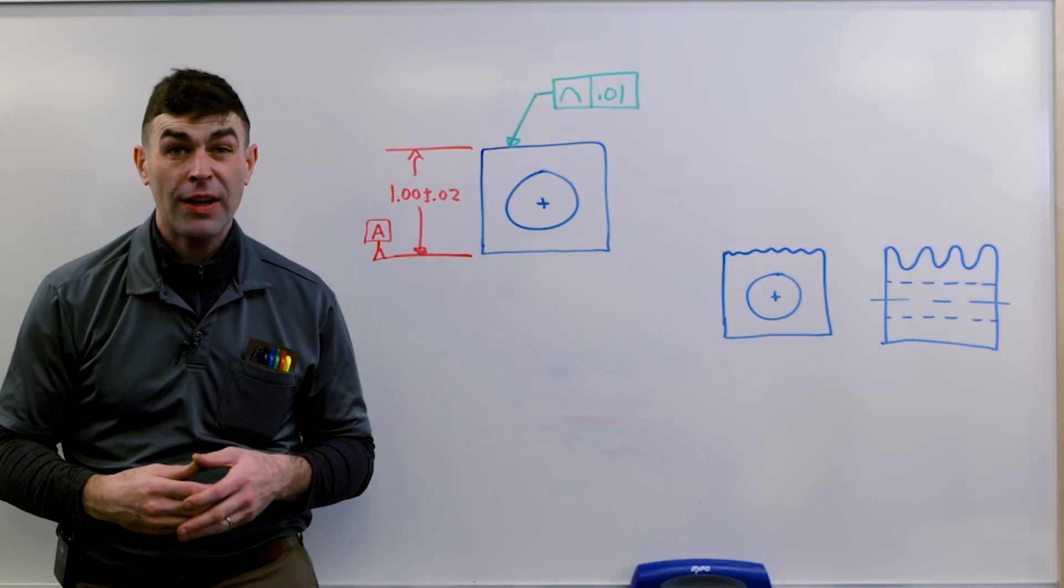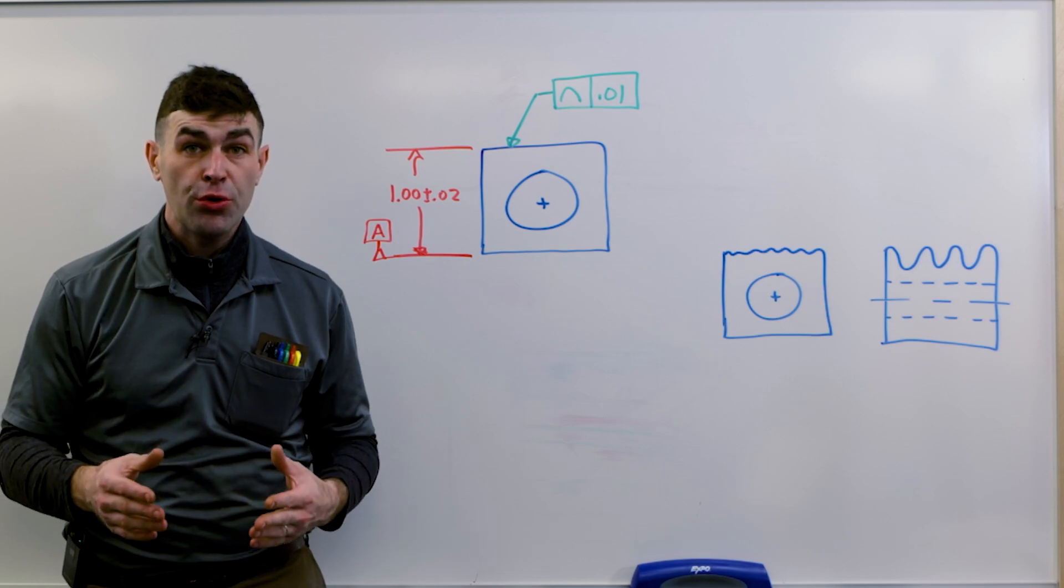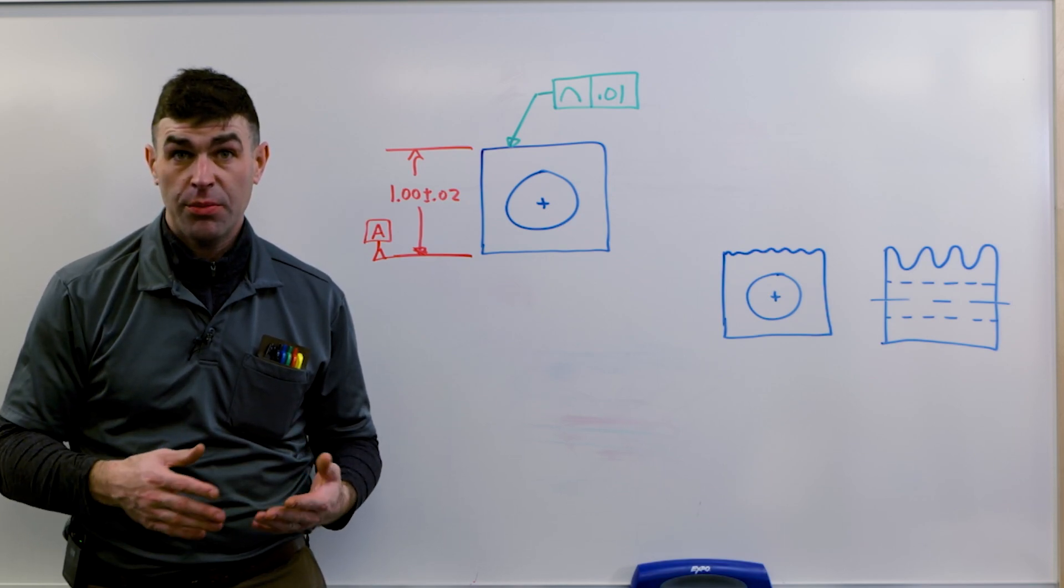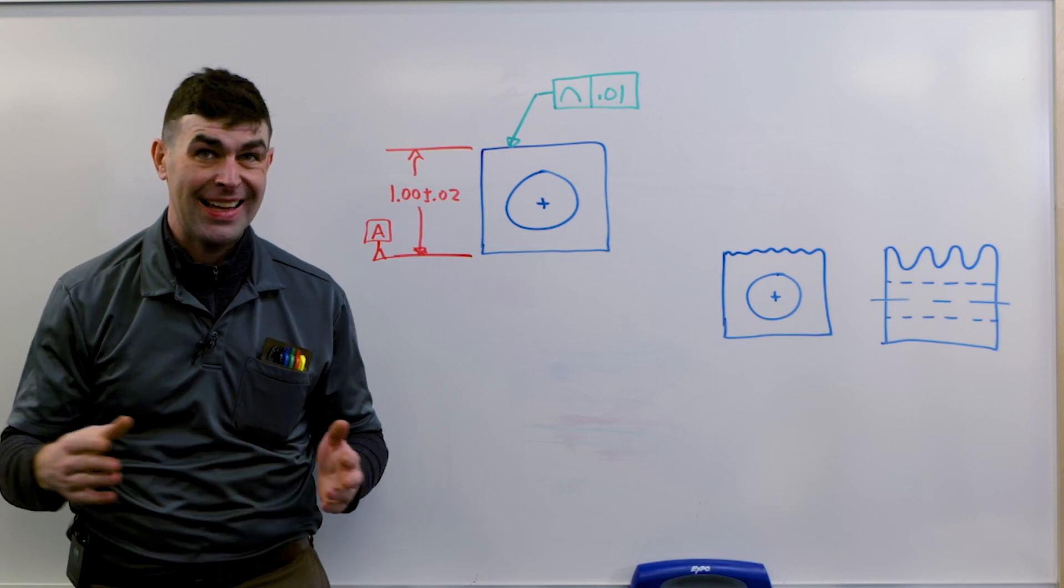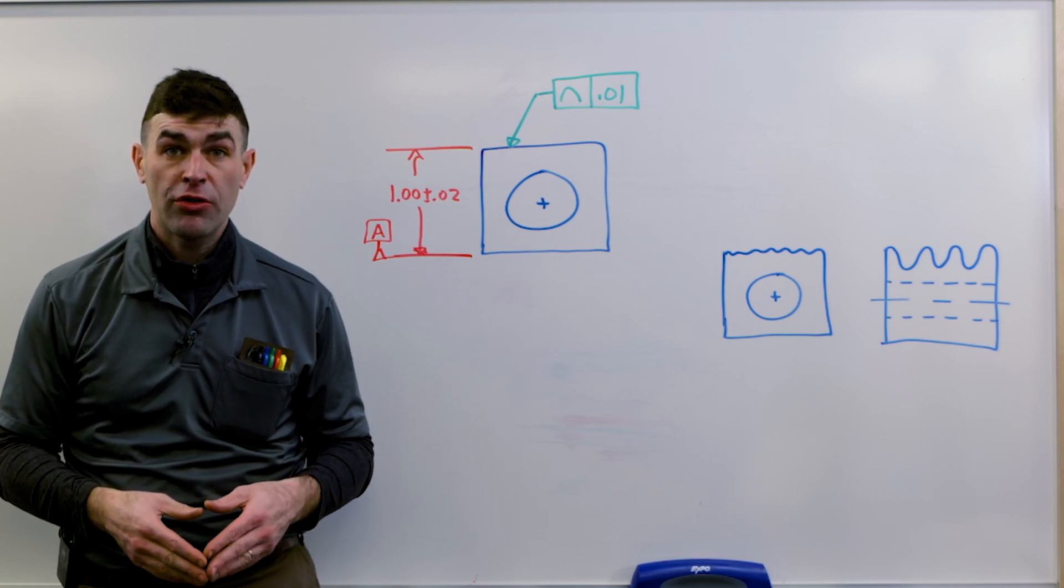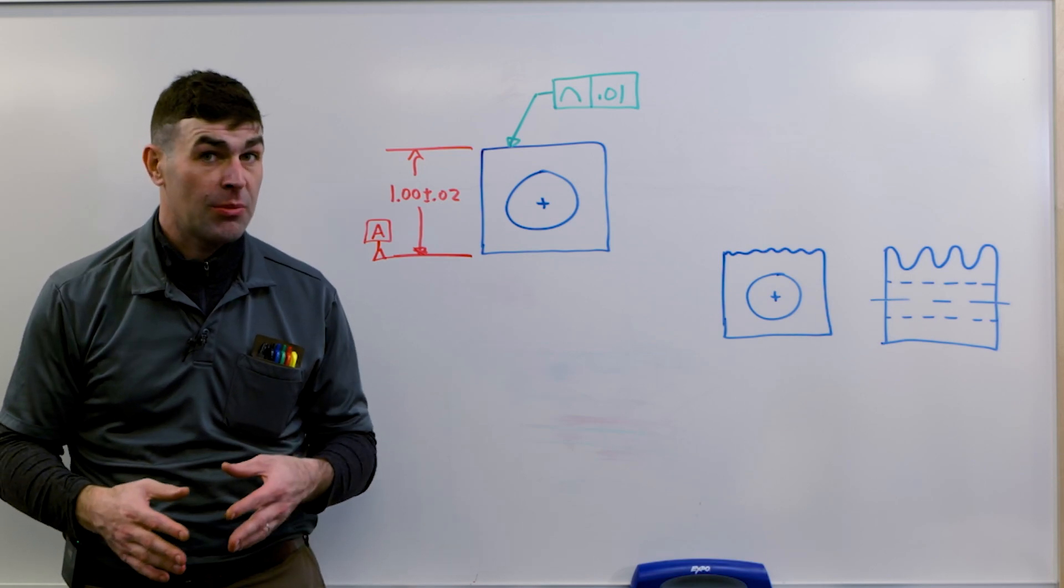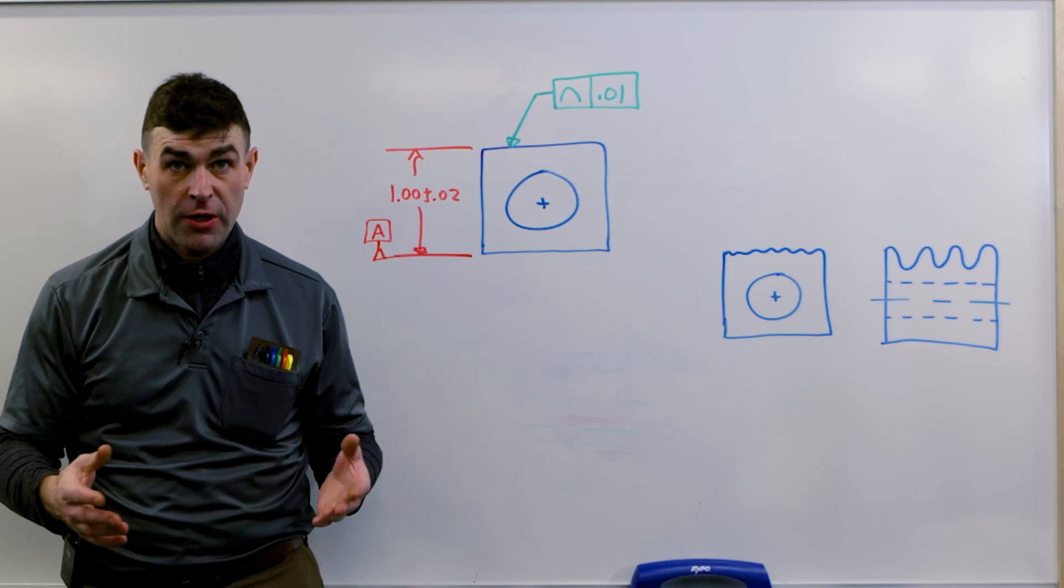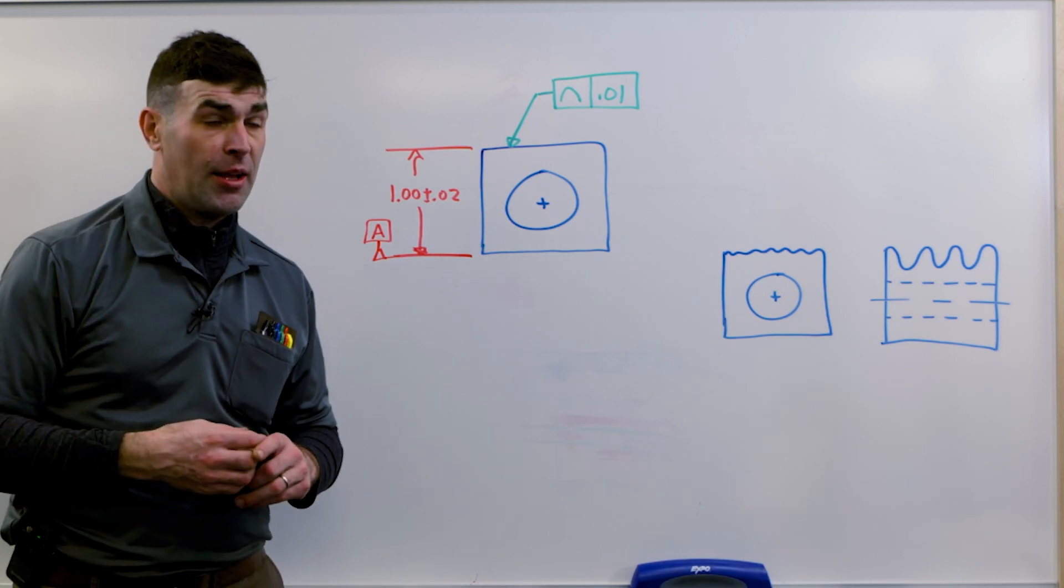In this video I'm going to talk about profile of a line. Profile of a line is a two-dimensional tolerance in that it controls one section at a time and not an entire surface. In some cases it's very similar to a form tolerance like straightness. In other cases it can be very similar to circularity. It depends how it's applied. Let me give you an example.